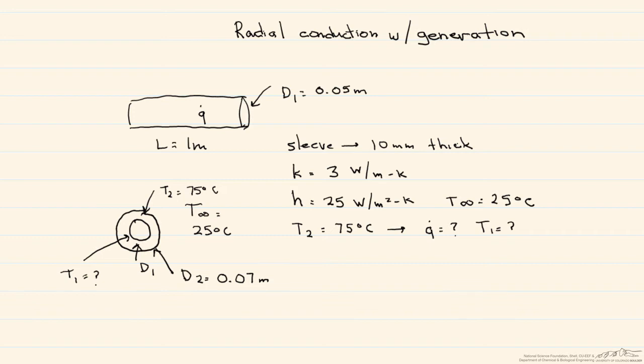So we're going to look at a few examples of how to solve problems that use radial conduction with heat generation. In this screencast, we're going to consider a rod.